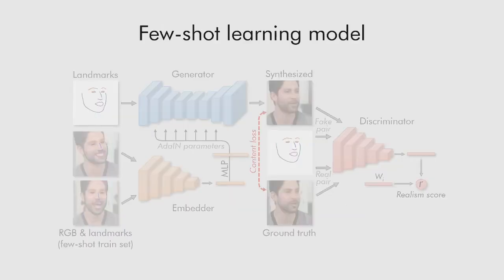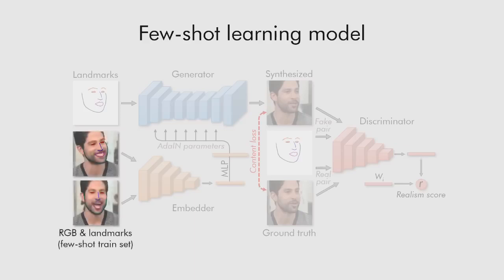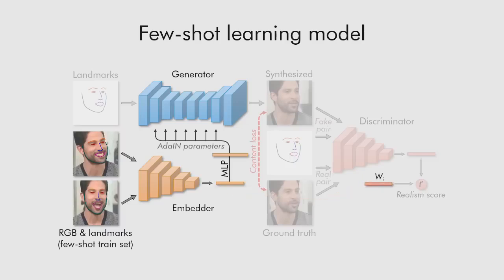After meta-learning, we are able to fine-tune the generator and the discriminator for a new person. The generator and discriminator networks have tens of millions of parameters. Still, such fine-tuning is possible on just a few images, thanks to the good initialization provided by the meta-learning stage. Before fine-tuning for a new person, we initialize the adaptive parameters of the generator and the video embedding inside the discriminator using the output of the embedder network.